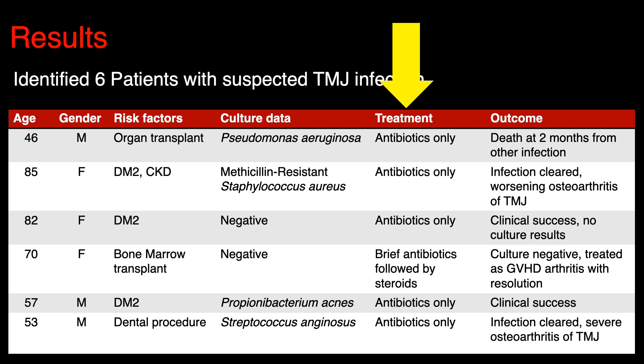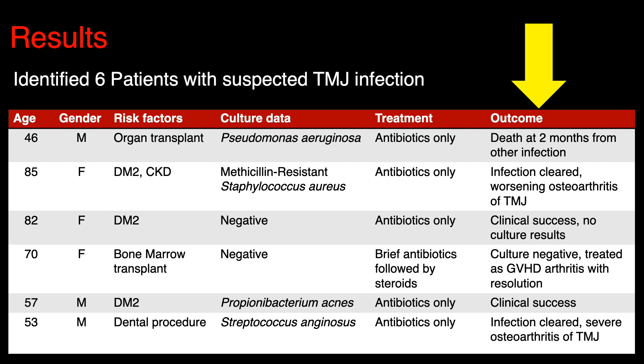For treatment, none of the patients went to surgery; all of them were treated with antibiotics. When we look at outcomes, findings are mixed. One patient died at two months from the index procedure, from sepsis from another infection. Several of the patients cleared their infections successfully, although progression to osteoarthritis during the follow-up time period was common. One patient was only briefly treated with antibiotics and, when culture was negative, was treated with steroids instead, with a presumptive diagnosis of graft-versus-host disease-related arthritis with clinical resolution of symptoms.